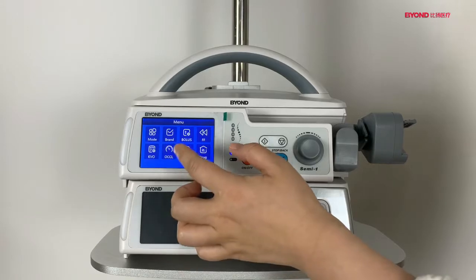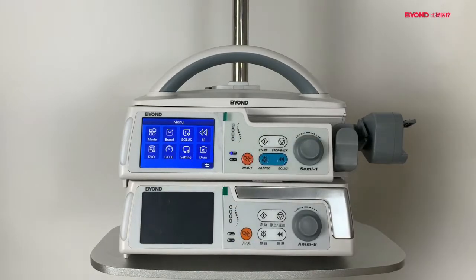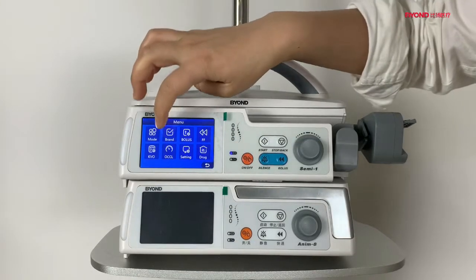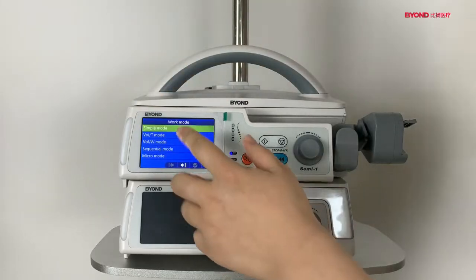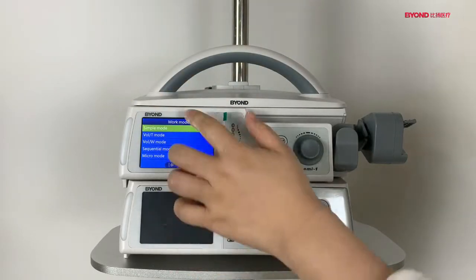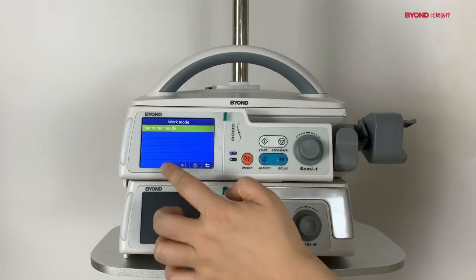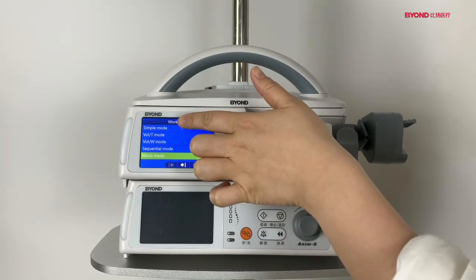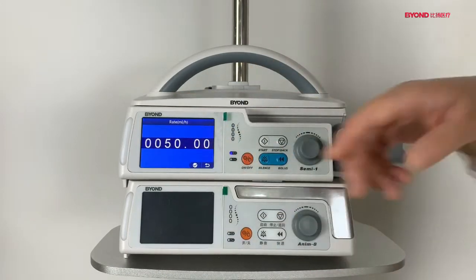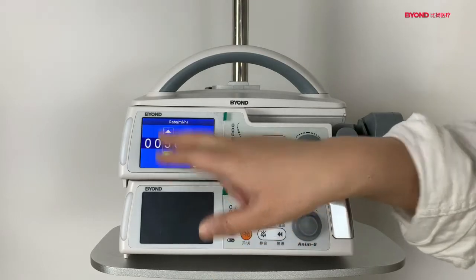you can see the different symbols where you can set the parameters. First is work mode. You can check there's many work modes. First is simple mode where you can adjust the rate delivery.